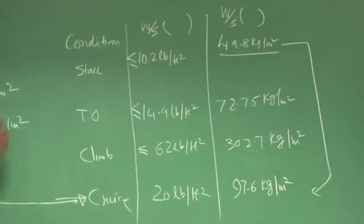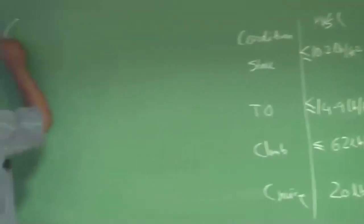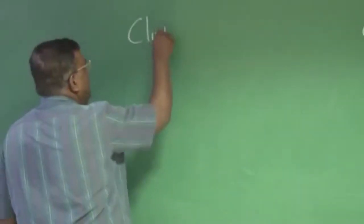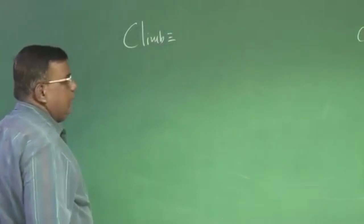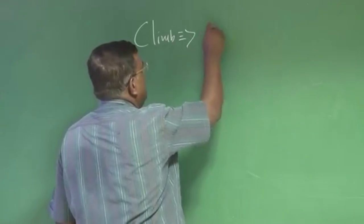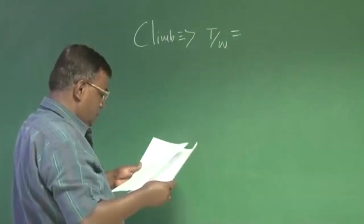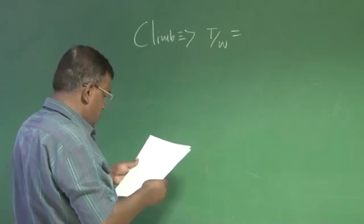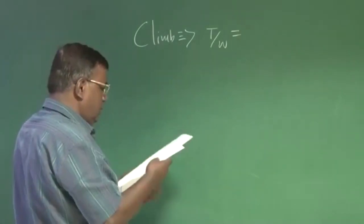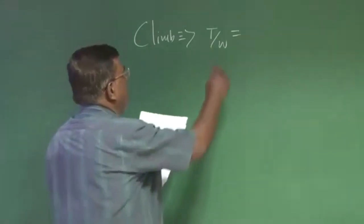Next, we will see what happens if I take climb condition. If you have to maintain the climb 1500 feet per minute, it tells me two things. So that T by W should be around, if you check your notes, T by W should be around 0.465.